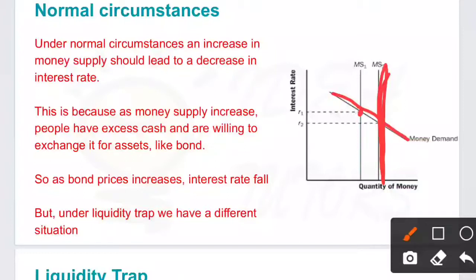In normal circumstances when money supply is increased, interest rate should fall. This is because when money supply is increased, people have excess cash with them which they can spend or invest. People usually buy bonds with that extra cash because bonds will give them interest, and holding cash will not give any extra interest. So when they are demanding more bonds, the prices of bonds increase and thus interest rate falls.